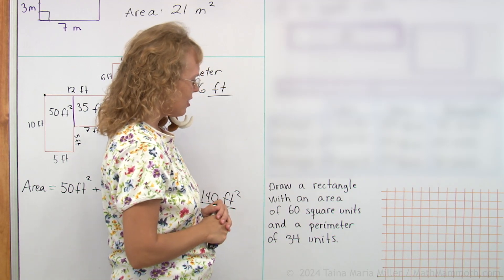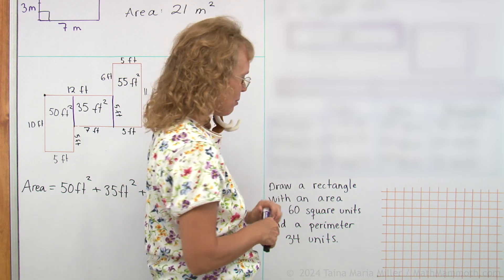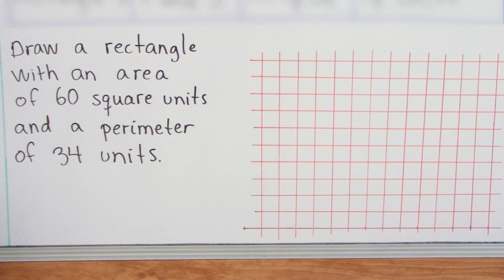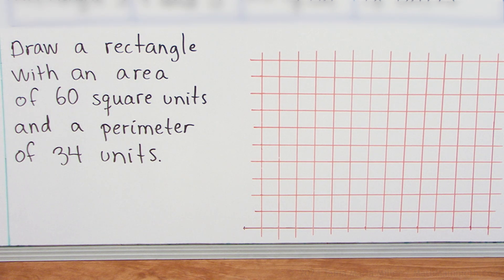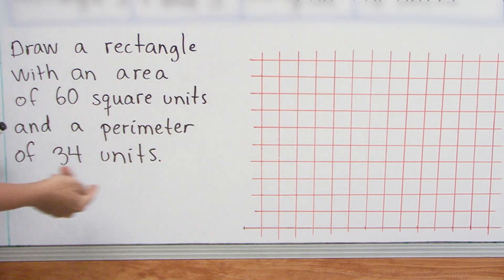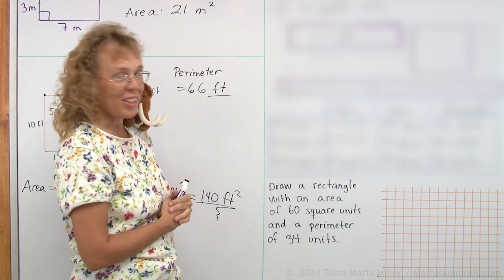Lastly we have here a little bit of a puzzle. Math is getting excited. Well it's not very difficult. Let's try. Draw a rectangle with an area of 60 square units and a perimeter of 34 units. It has to have an area of 60 squares here and the perimeter has to be 34. Are you thinking? Math is thinking. Are you thinking?